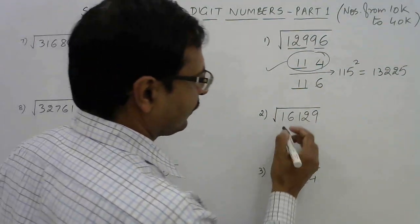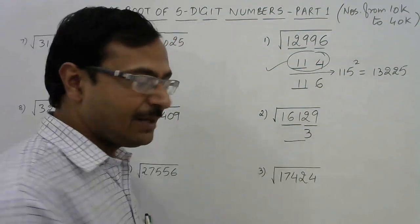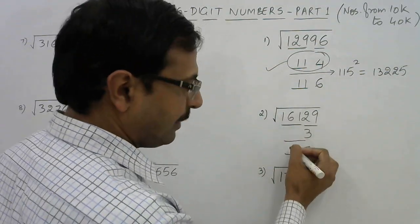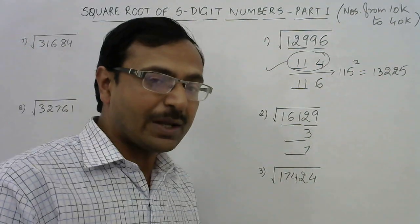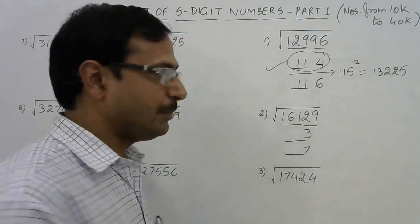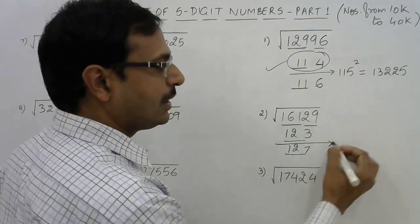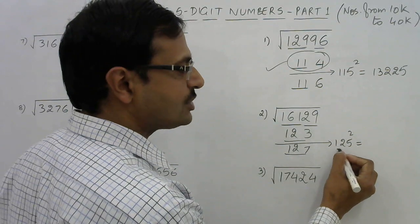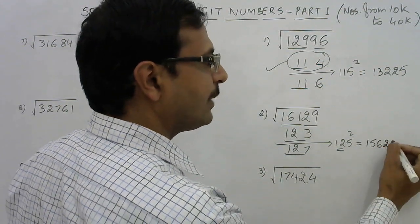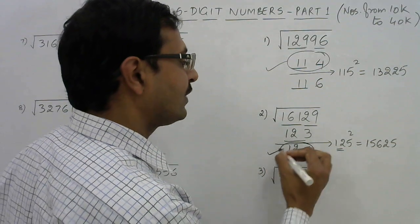Let's see 16129. Split it into 161 and 29. It is ending with 9, so our answer will end with either 3 — because 3 times 3 is 9 — or 7 — because 7 times 7 is 49, ending with 9. The balance part is 161. What is the perfect square below 161? It is 12 squared, 144, because 13 squared is 169 which is above 161. So 12 is the remaining part, giving either 123 or 127. The intermediate number is 125. 12 times 13 is 156, so 125 squared is 15625. Comparing: 16129 is greater than 15625, so our answer is the larger one — 127.